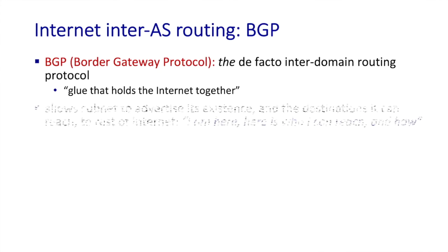BGP allows a network to advertise its existence to the rest of the internet, as well as the paths that it has to these destination networks. It allows a BGP router to say here I am, here's who I can reach, and here are the paths that I have to these destinations. This means that on the receiving side, BGP provides each autonomous system with the means to obtain destination network reachability information from its neighbors.